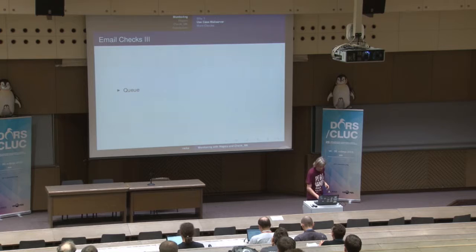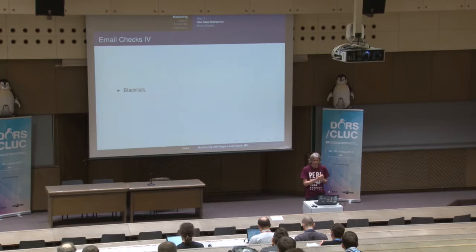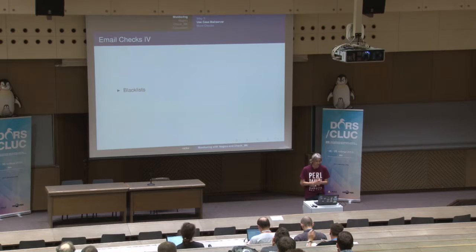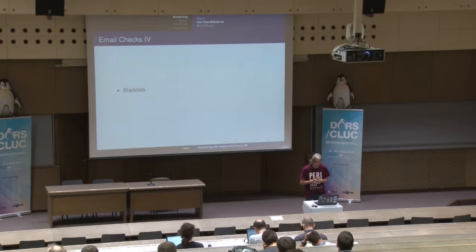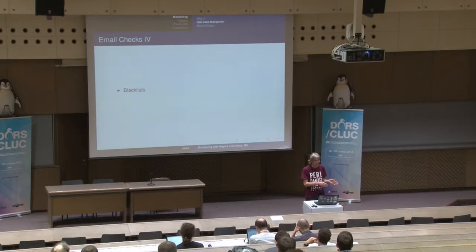Another situation you want to prevent is getting your mail server blacklisted. Blacklists contain IPs from servers known to send spam, often sitting on dynamically allocated IPs. If you end up on one of the big blacklists, you'll notice soon that something is wrong. But there are a lot of blacklists around and some are not used by many people — still, if your boss sends an important email to someone and it doesn't get through because of a blacklist, that's a really bad situation you want to prevent.